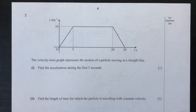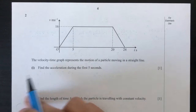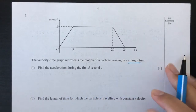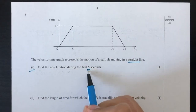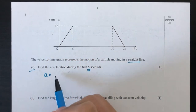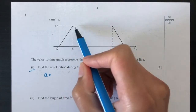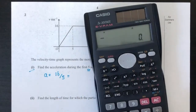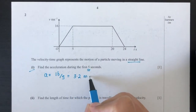Now question number 2. We have a speed-time graph showing the motion of a particle moving in a straight line. Part 1: find the acceleration during the first 5 seconds. As we know, on a speed-time graph, acceleration equals the gradient — height divided by base. The height is 16 divided by base 5, so 16/5 = 3.2. Acceleration is 3.2 m/s².